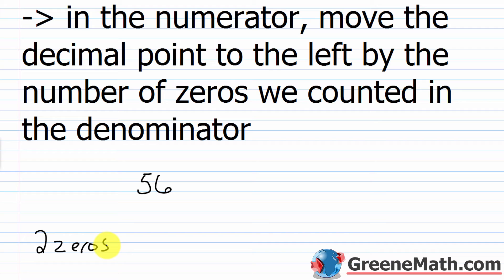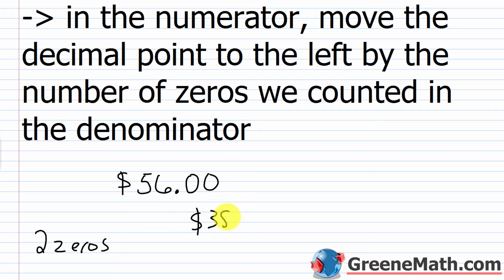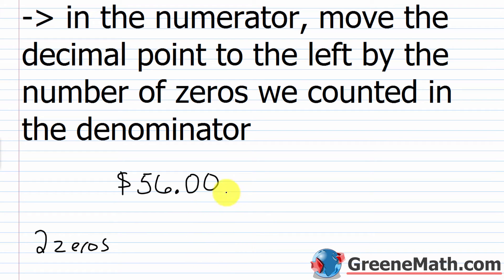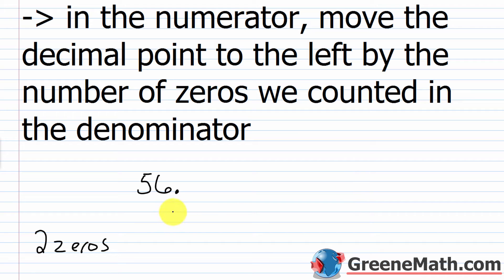For a whole number like 56, you can write it as 56. followed by as many zeros as you want — that doesn't change the value. We counted two zeros in the denominator, so we move the decimal point one, two places to the left, ending up with 0.56. Also, when you have a decimal point and no whole number, put a zero out front for clarity — so people don't mistake 0.56 for 56.